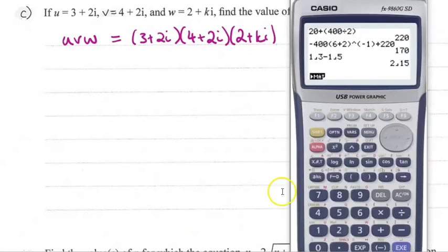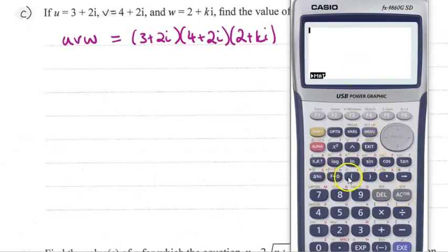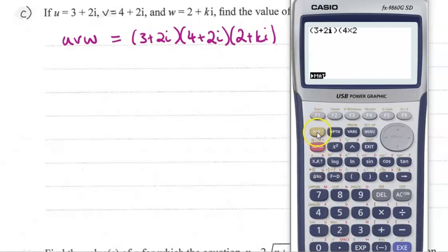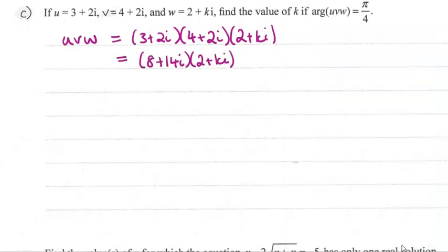The first thing is don't do anything by hand if you don't have to. So 3 plus 2i times 4 plus 2i — we don't have to expand that out by hand. That's 18 plus 14i. We can just put that straight in for this multiple here.